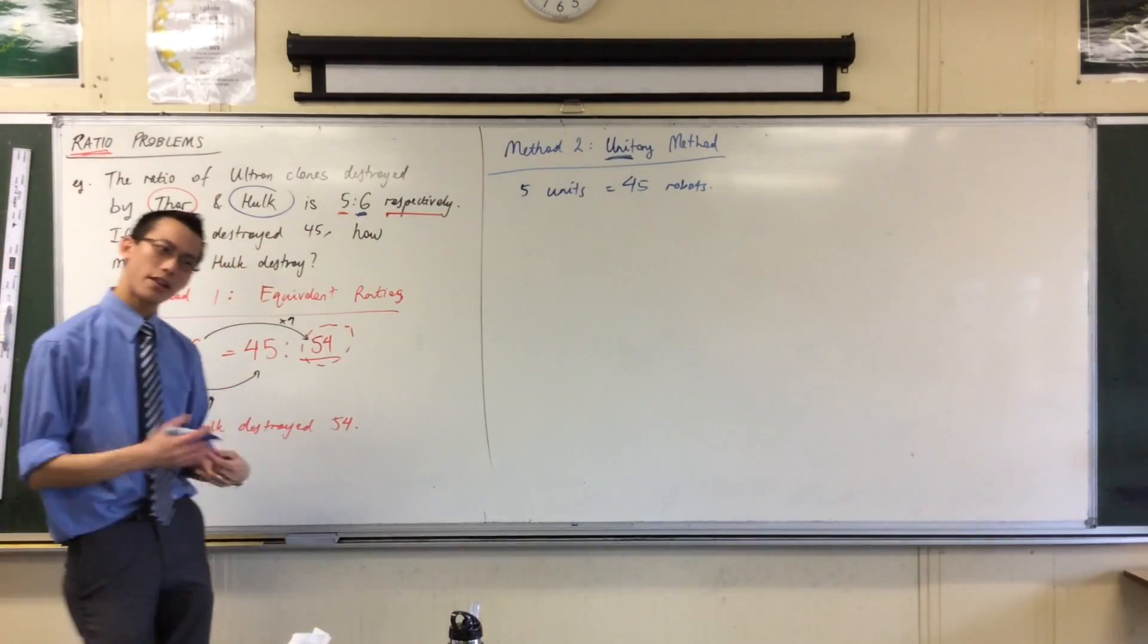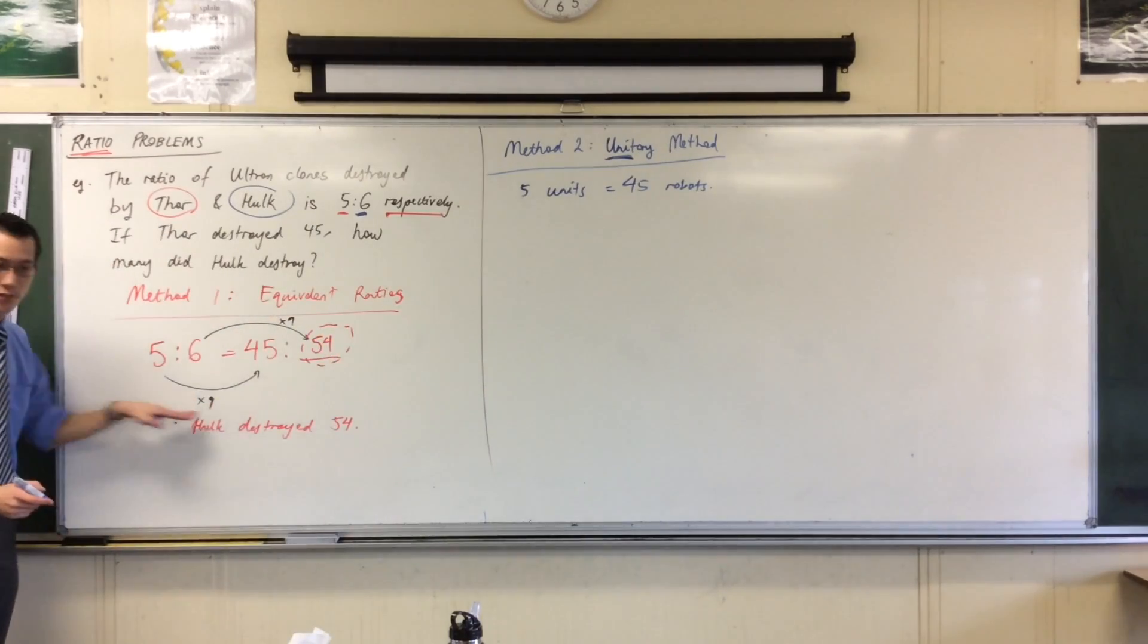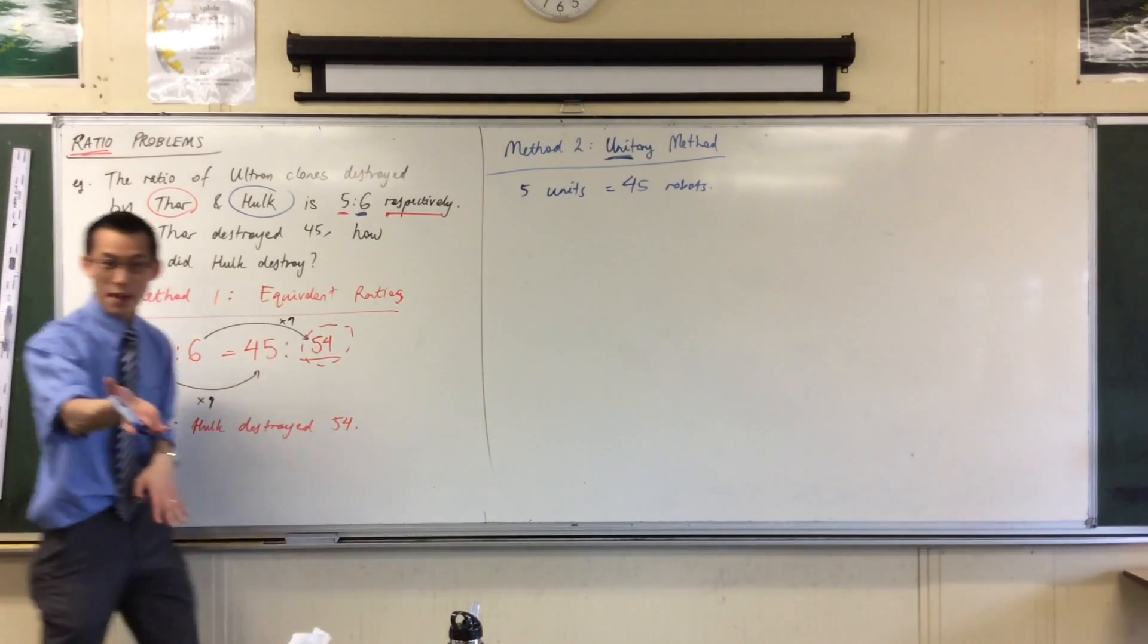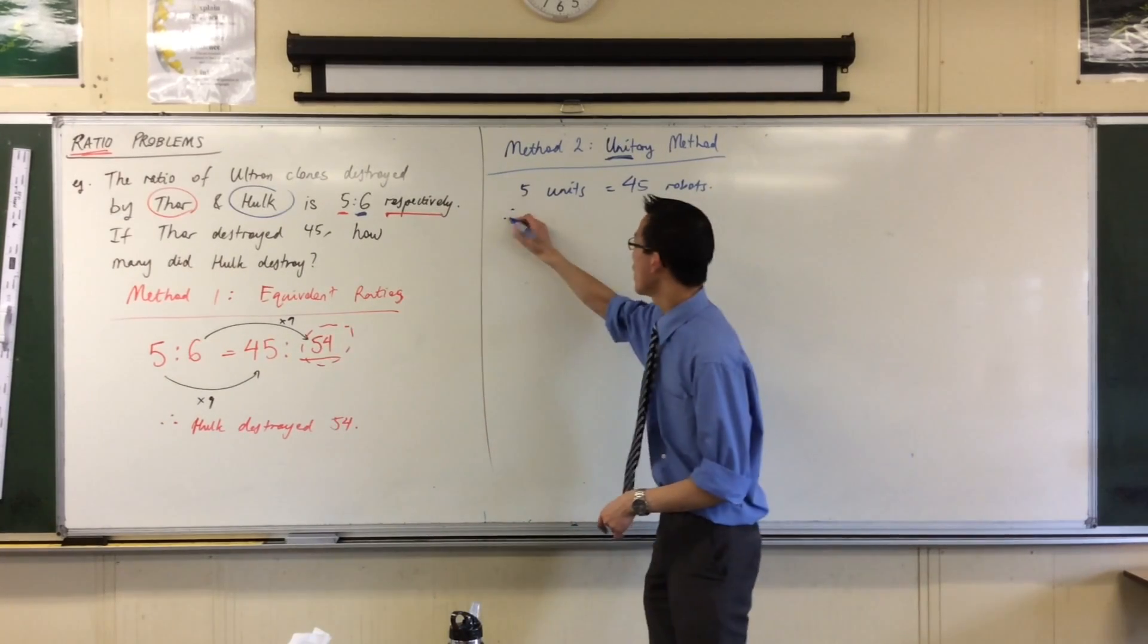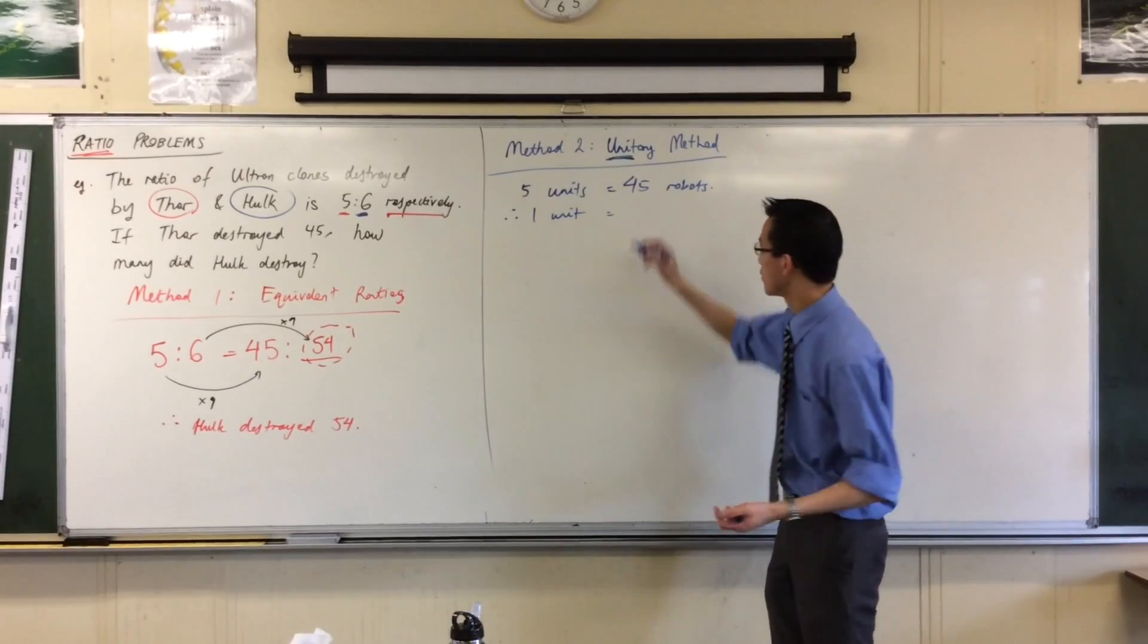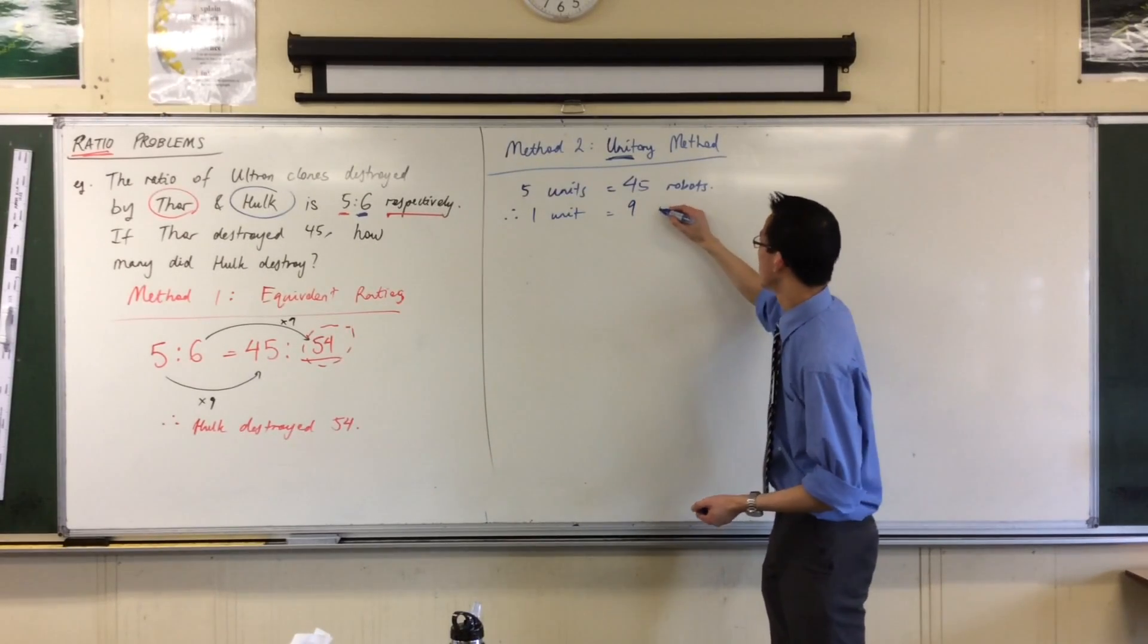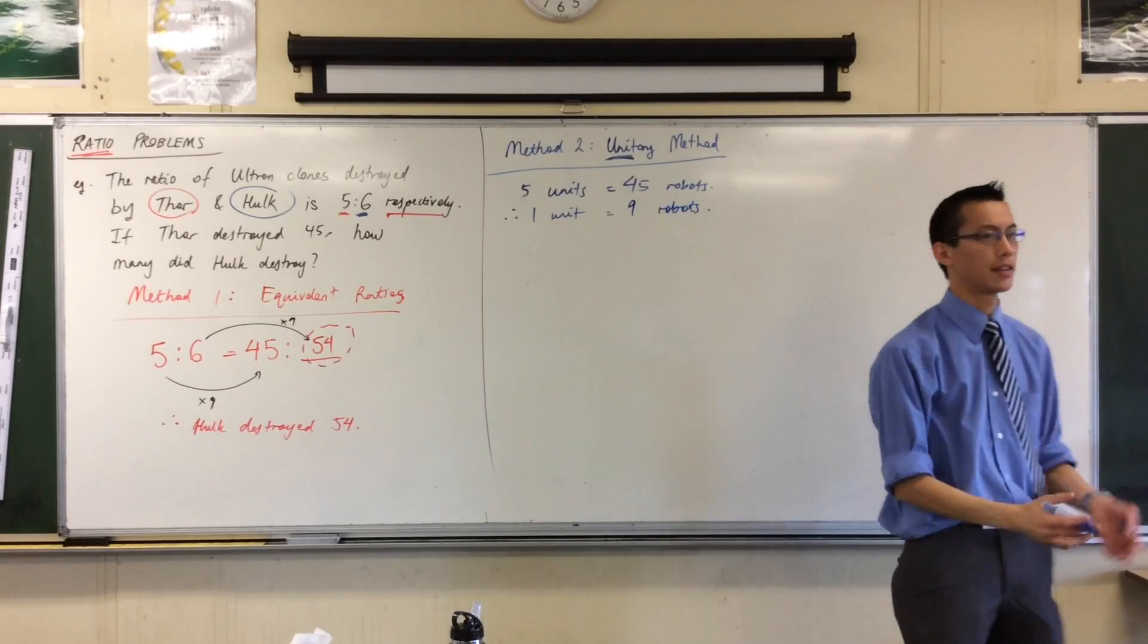Five corresponds to 45. Okay. Therefore, I can very easily work out what one unit is, right? In the same way that I did multiply by nine, I'm going to divide by nine. This is division, actually. So five units is that. Therefore, one unit equals, divide by nine? Five. Sorry, nine. Because you were dividing by five. Fantastic.